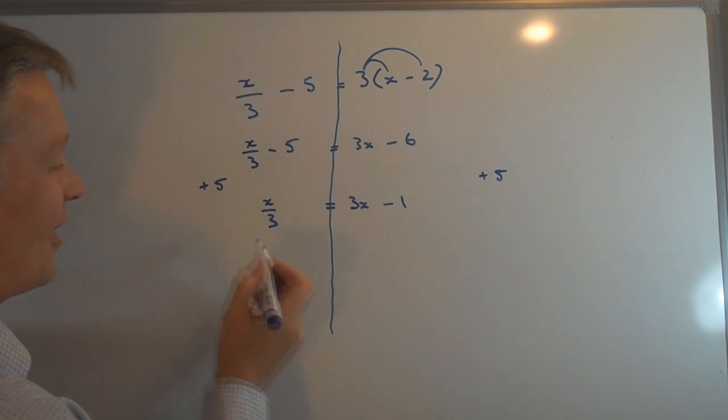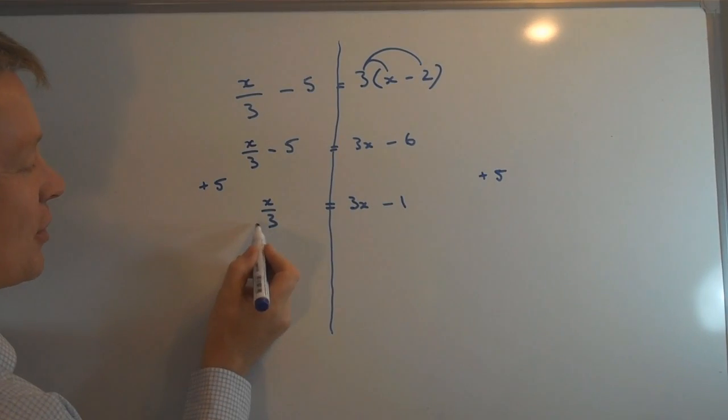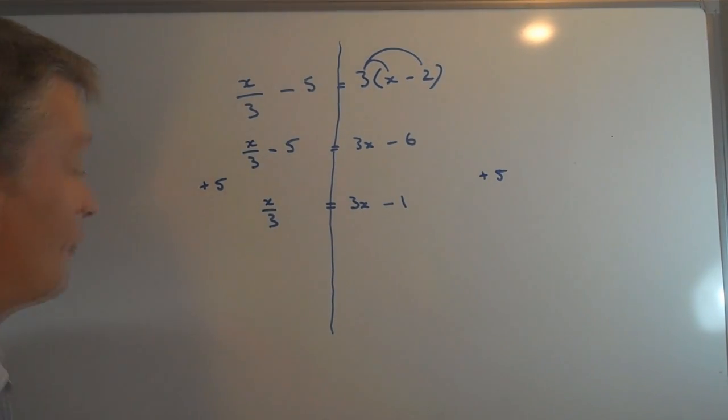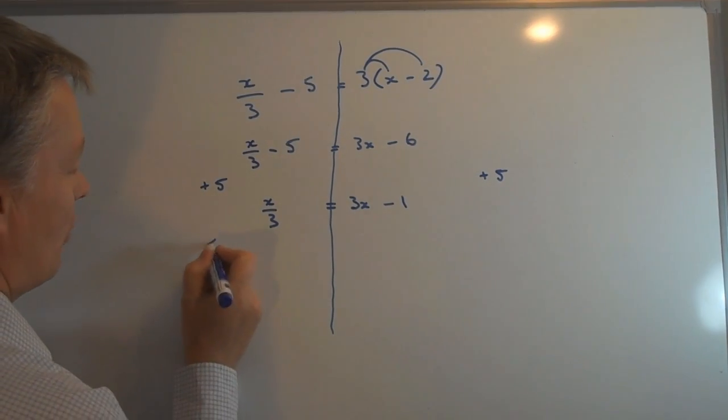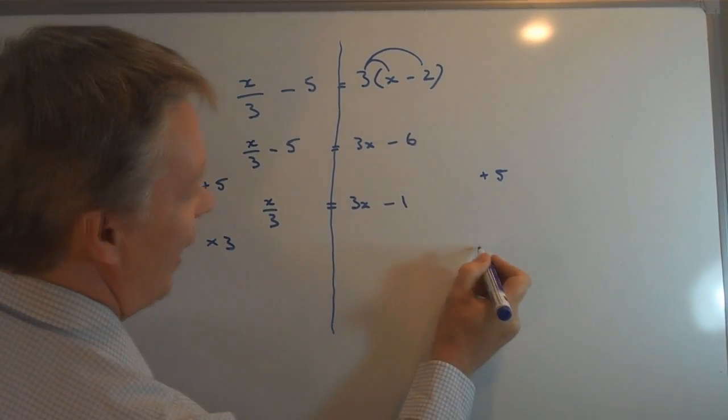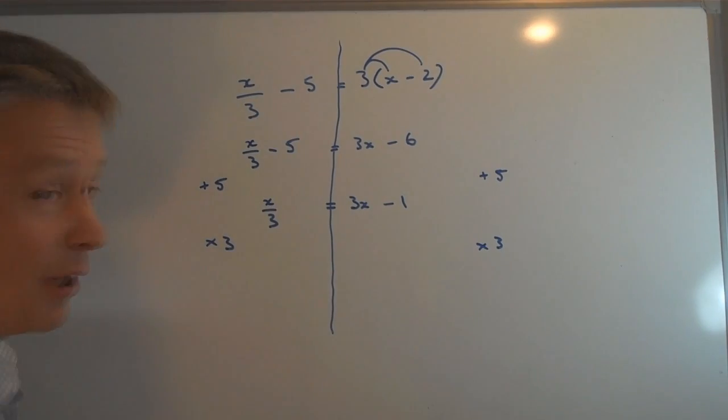I'm going to get rid of this division by multiplying by 3, because x over 3 multiplied by 3 is just going to give me a value of 1x. So if I multiply this side by 3, I have to multiply that side by 3.